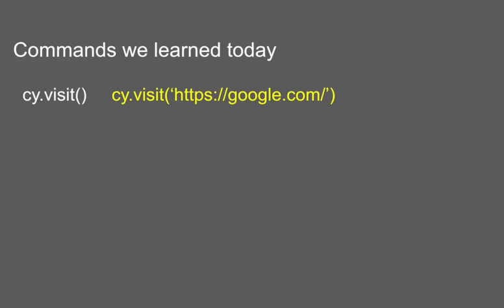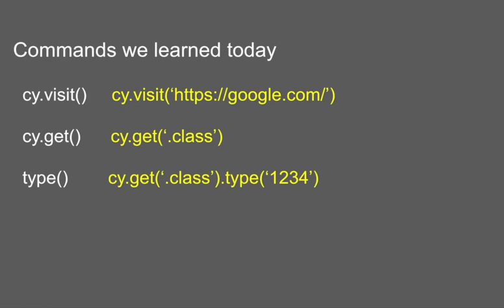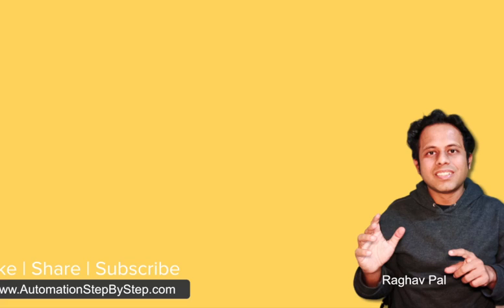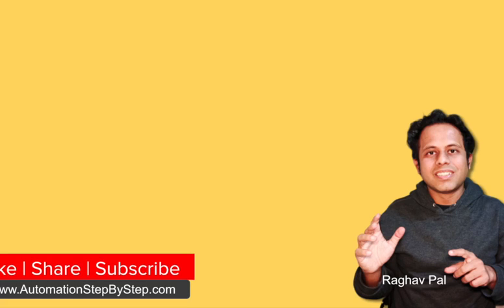The commands we have learned today are: cy.visit to go to any URL or web page, cy.get to access or locate any object, and the type command used after cy.get to type text into an element. We can also use click after locating an element to perform a click action. Cypress has so many awesome commands that we are going to learn in the coming sessions. You can always take the Cypress quiz on my website automationstepbystep.com. Thank you for watching and never stop learning.